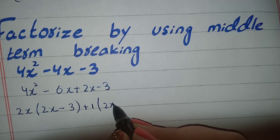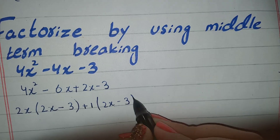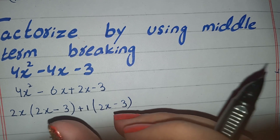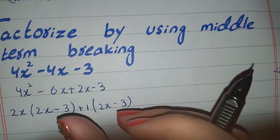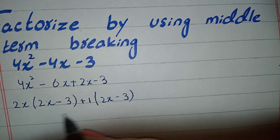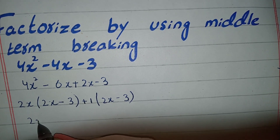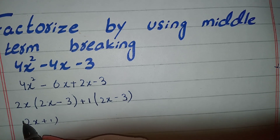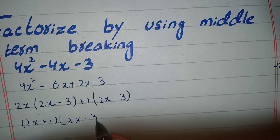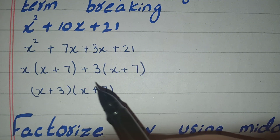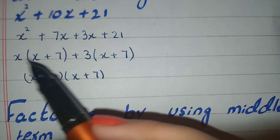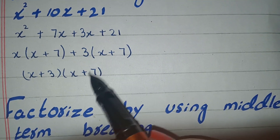And what is it? 2x and minus 3. Now you can see the same bracket. Check that you don't have any mistakes. Now, if you want to join them, write them as 2x plus 1. Write them one time. It was a common bracket and a common bracket. So, we have solved these questions.